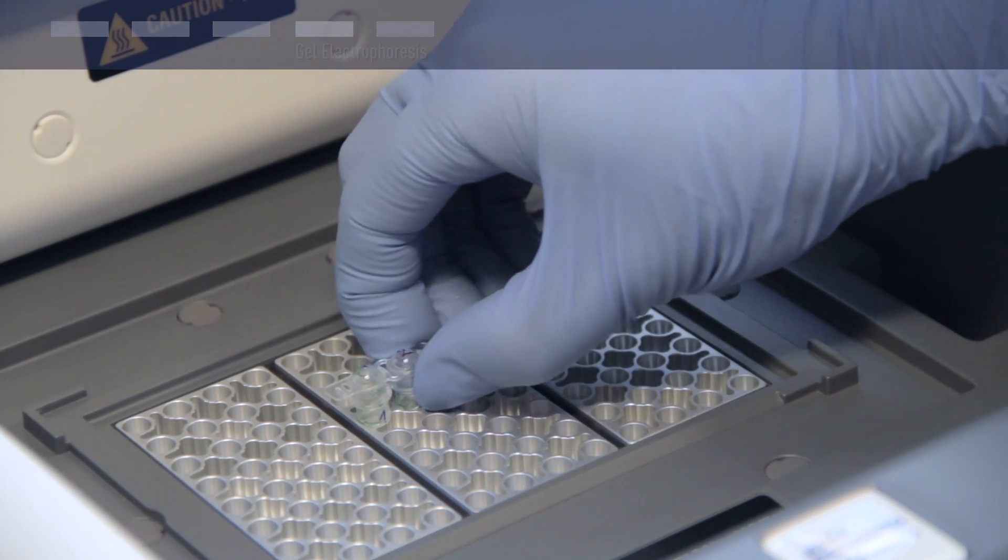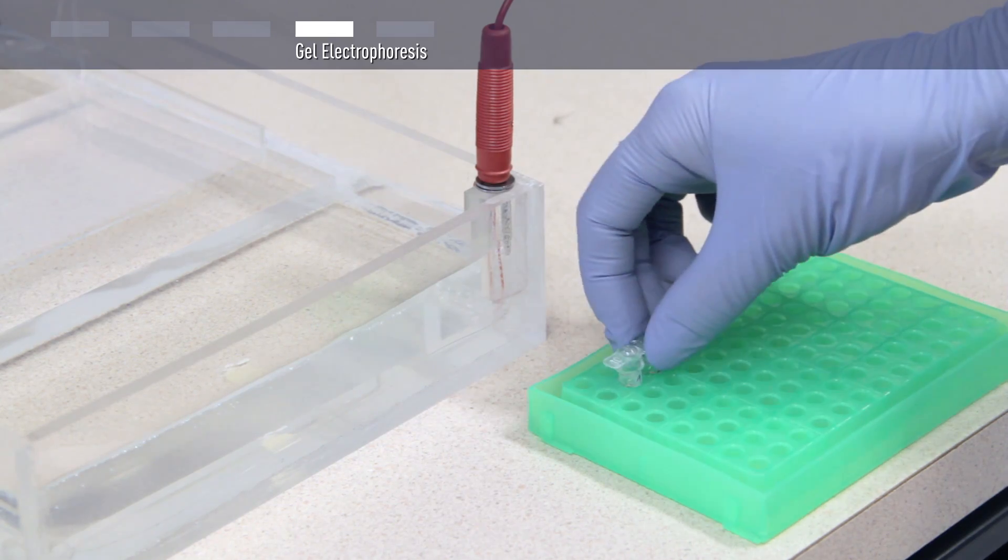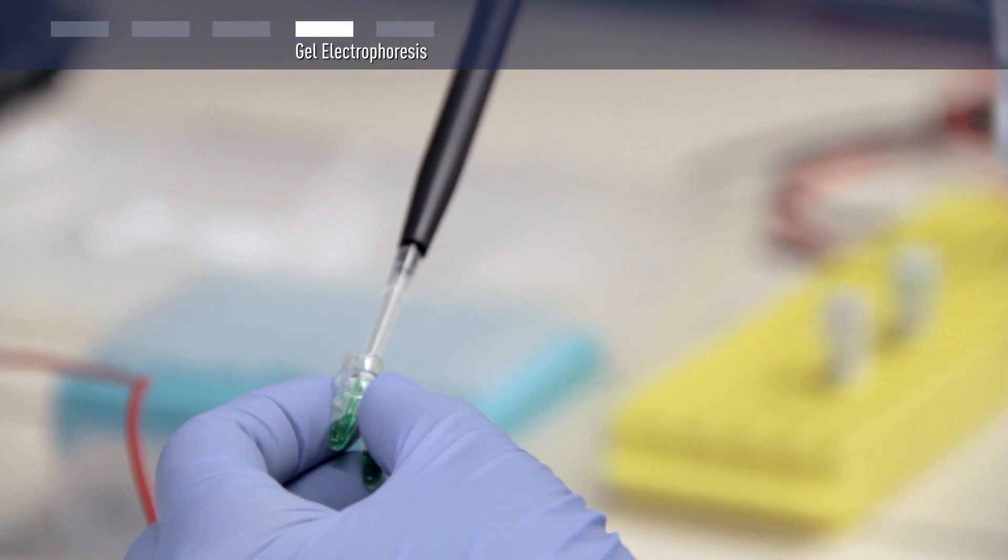After PCR, analyze products by gel electrophoresis. To do that, simply load 5 to 15 microliters of your PCR mixture directly on a gel.